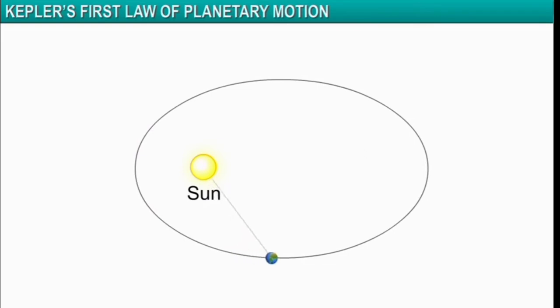As you can see, in an elliptical orbit, the distance of the planets from the Sun is not constant.